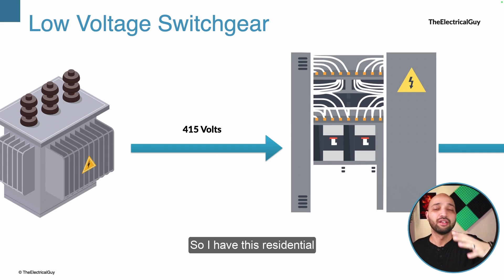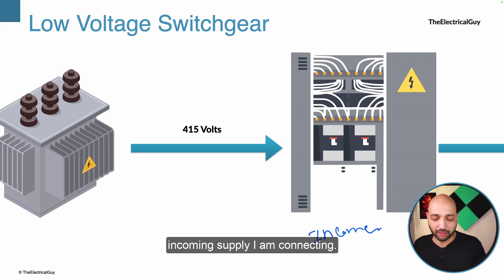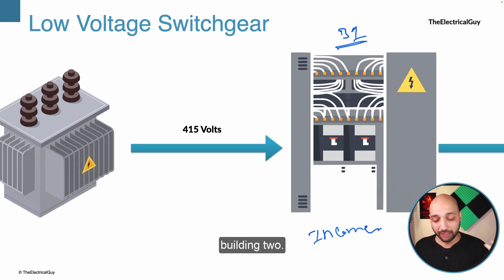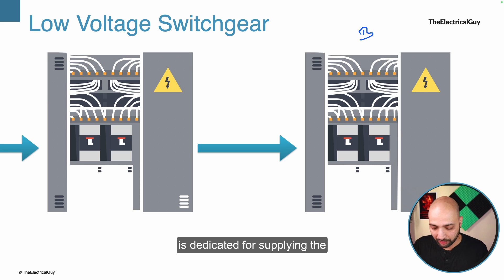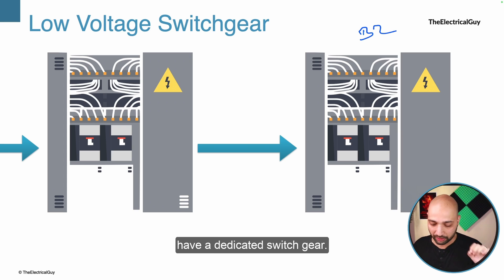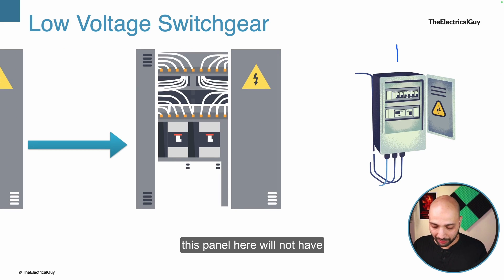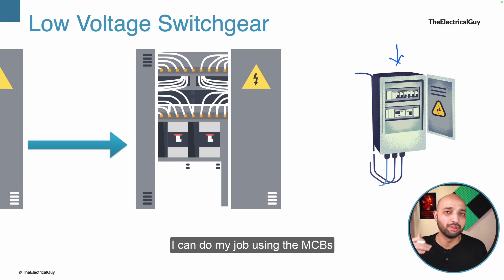In a residential scenario, supply from the utility is connected to the main incomer panel. From there supply goes to building 1. For building 2, a feeder is taken to a dedicated panel. For each floor of the building, a dedicated switchgear is also possible. The floor-level panel does not need an air circuit breaker — the job can be done using MCBs and regular contactors. High rupture capacity air circuit breakers are not required at that level.